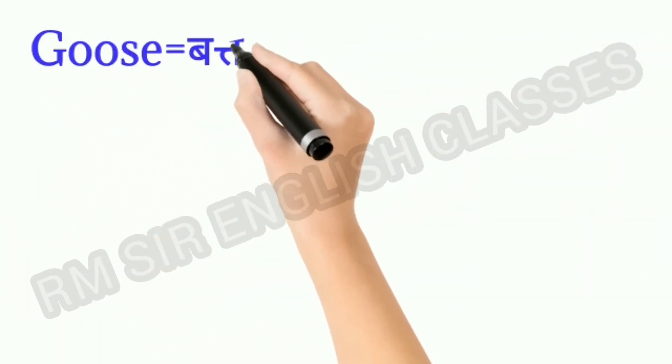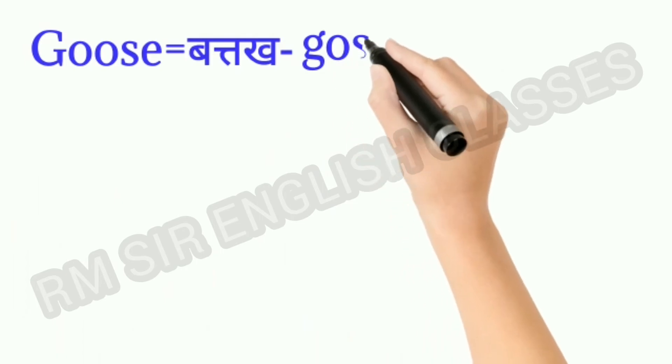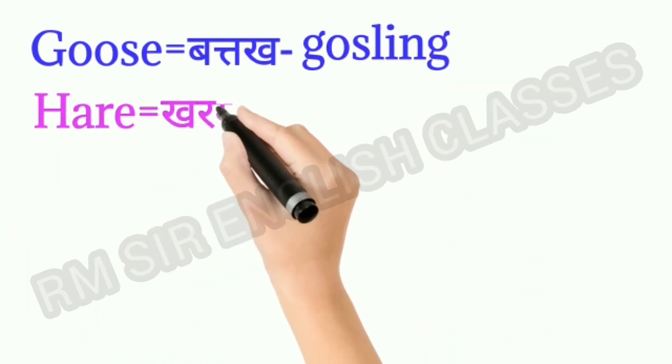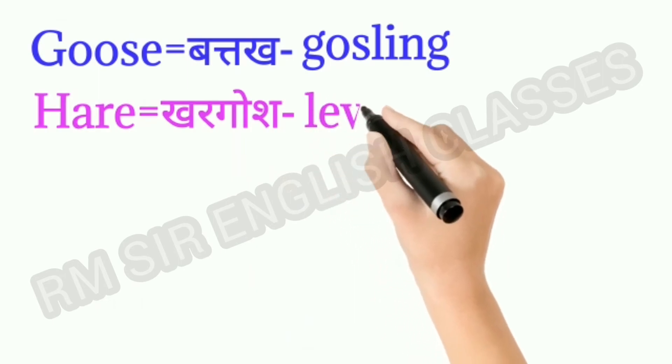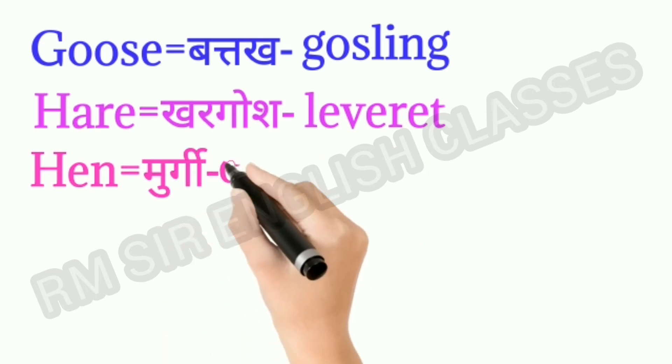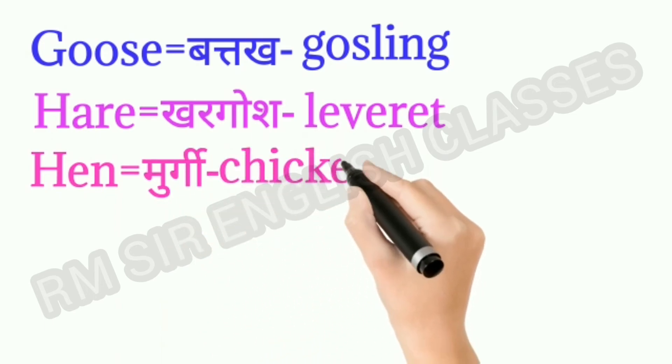Goose means batak. Baby goose is called gosling. Hare means khargosh. Baby hare is called leveret. Hen means murgi. Baby hen is called chicken.